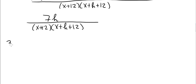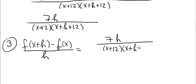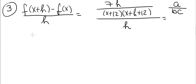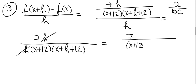Step 3: compute f of x plus h minus f of x, divided by h. From step 2, we found that f of x plus h minus f of x equals 7h divided by x plus 12 times x plus h plus 12. Dividing by h is like a over b divided by c, which equals a over b times c. So this becomes 7h divided by h times x plus 12 times x plus h plus 12. The h's cancel, and we're left with 7 in the numerator divided by x plus 12 times x plus h plus 12. That's the end of step 3.